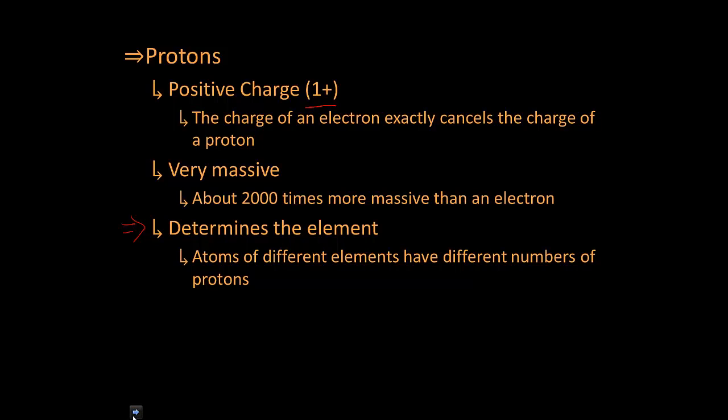Lighter elements have fewer protons. So the lightest element in the world that we know of is hydrogen, and it has one proton and one electron.